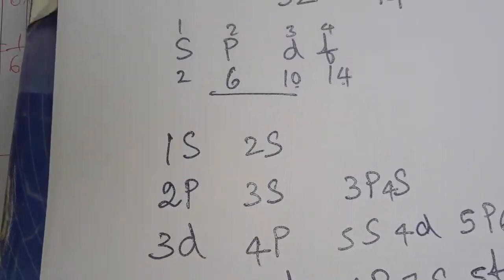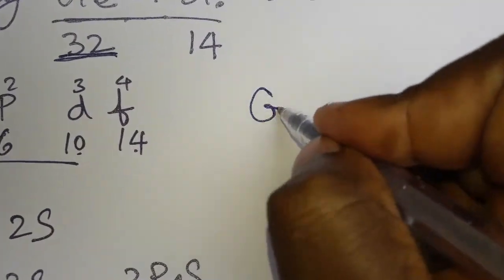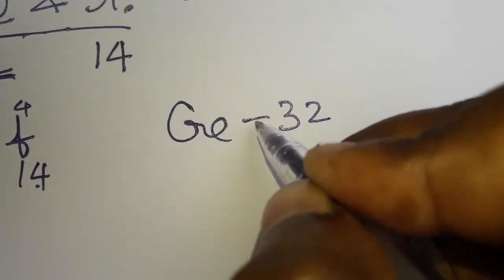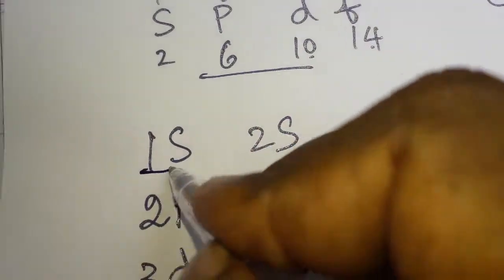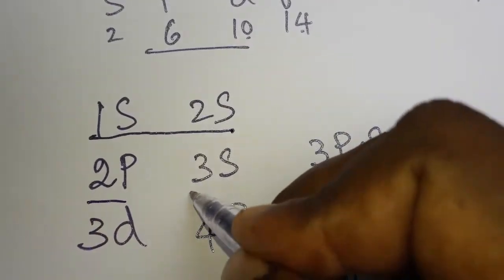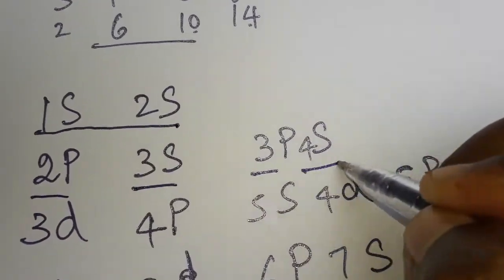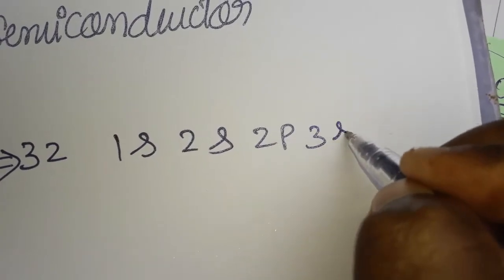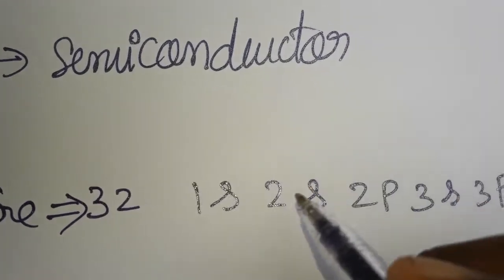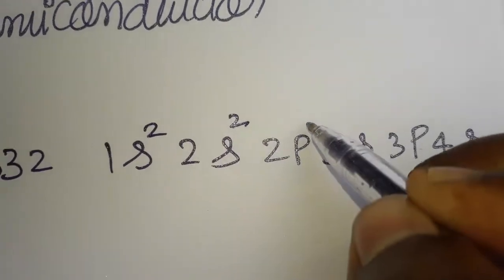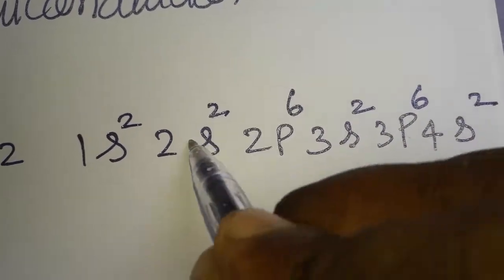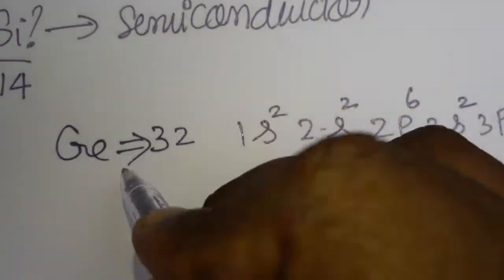Now for germanium, its atomic number is 32. We write: 1s², 2s², 2p⁶, 3s², 3p⁶, 4s². Counting the electrons: s gives 2, p gives 6, s gives 2, p gives 6, s gives 2 again — totaling 20 electrons so far, with 12 electrons remaining.